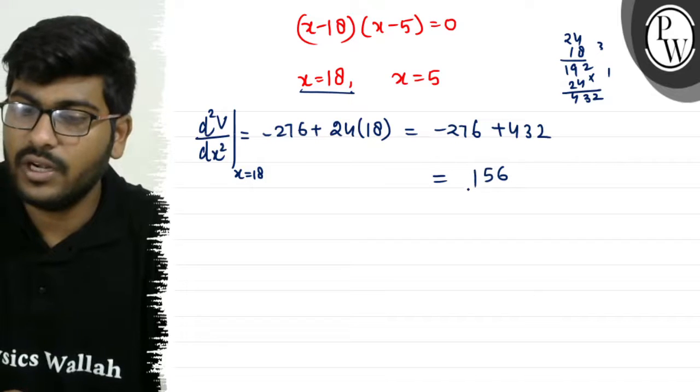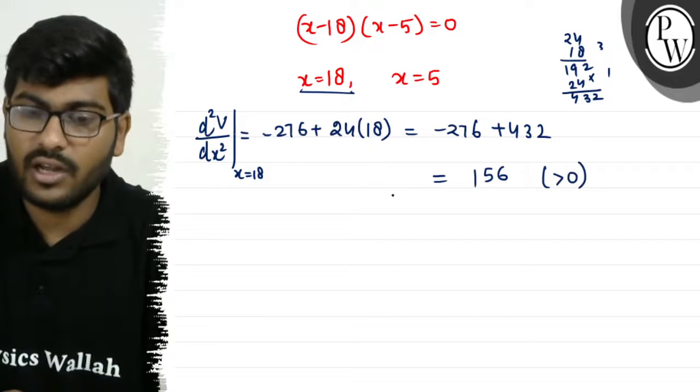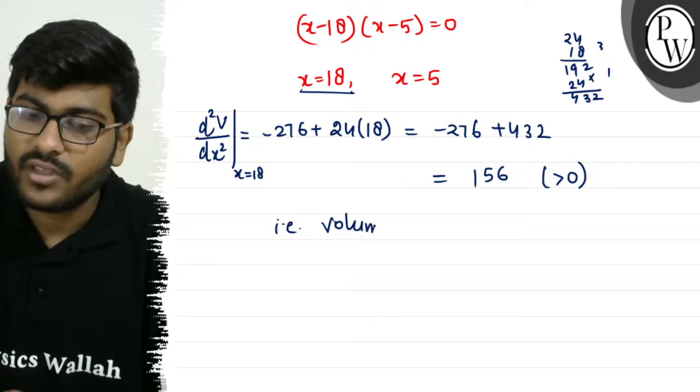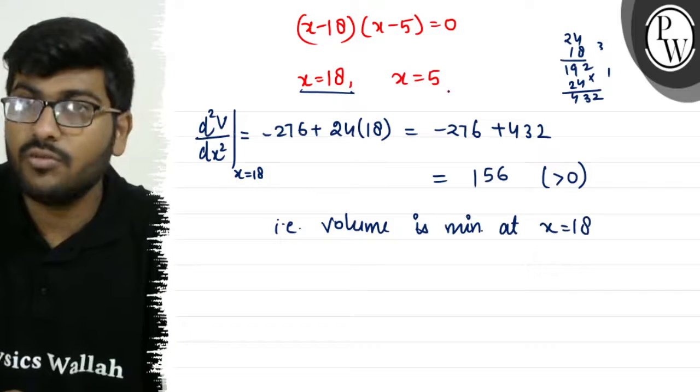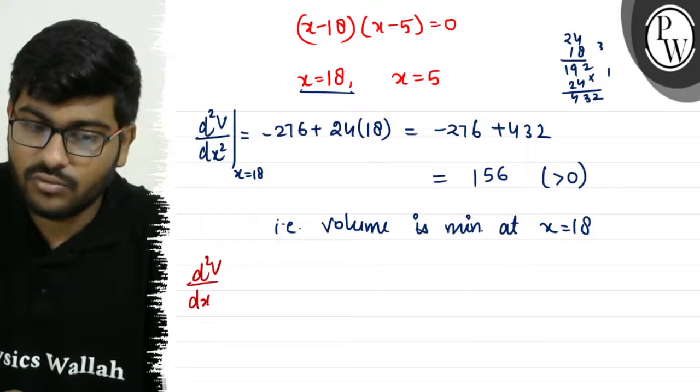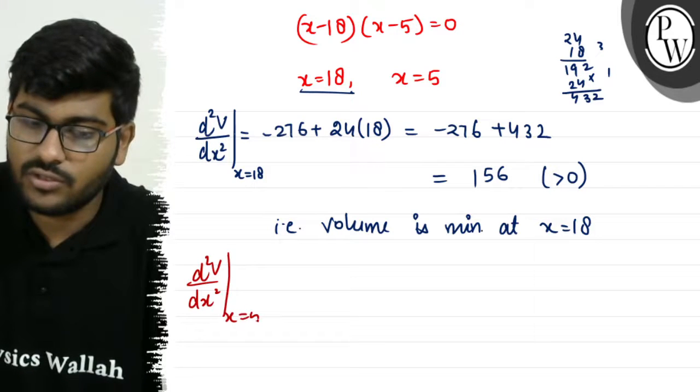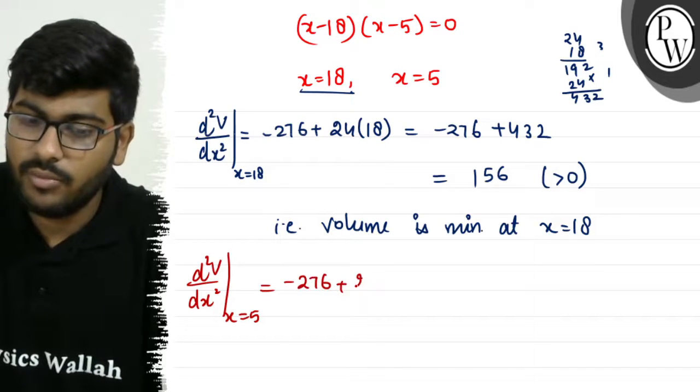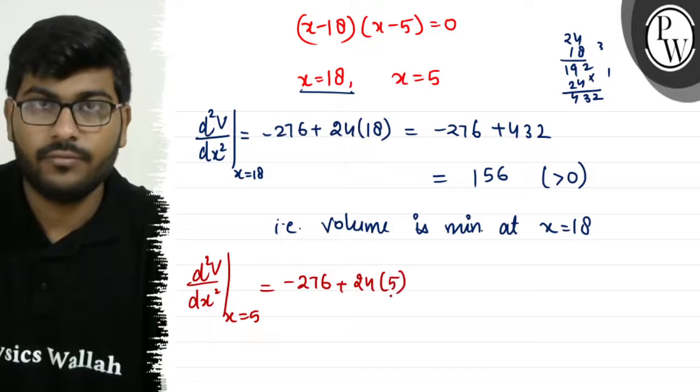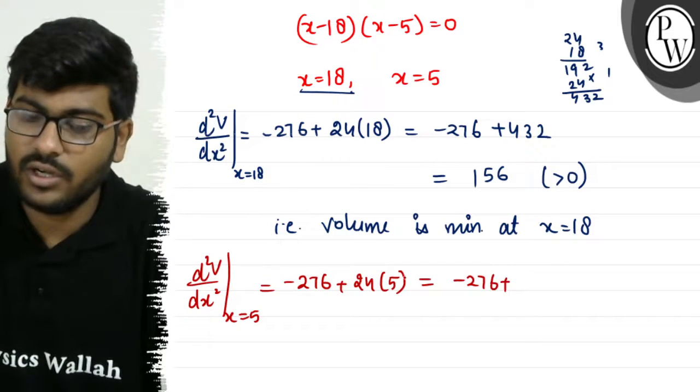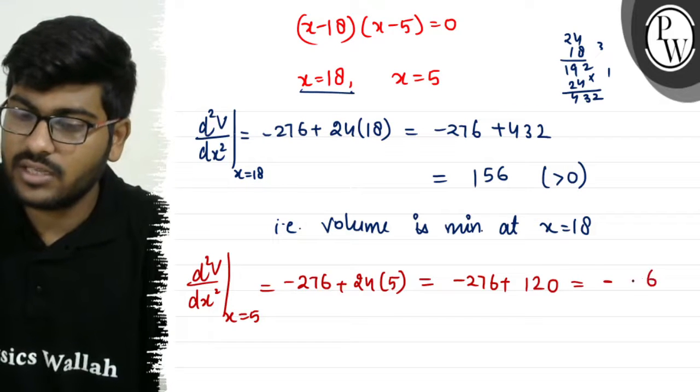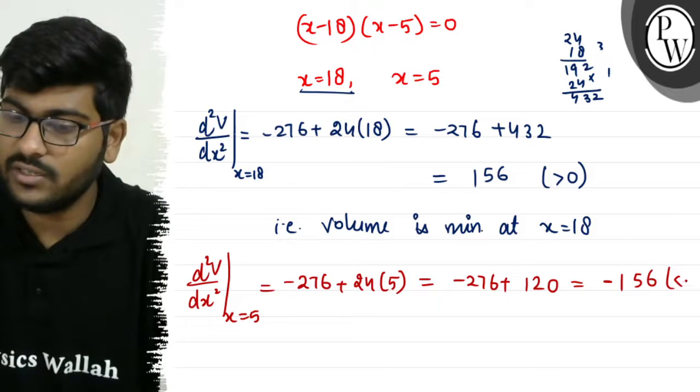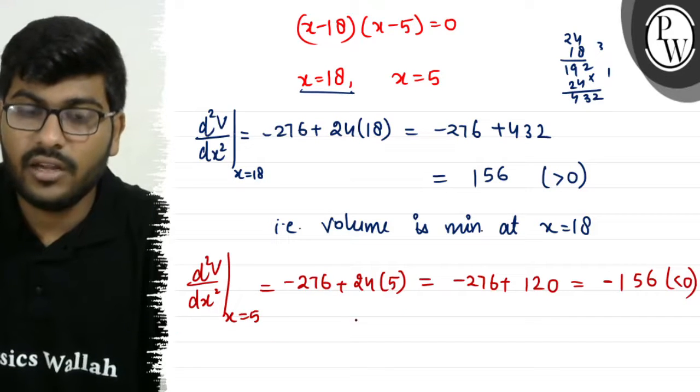At x equals 5, d²V/dx² equals minus 276 plus 24 into 5, which equals minus 276 plus 120, which equals minus 156, which is negative. This means volume is maximum at x equals 5.